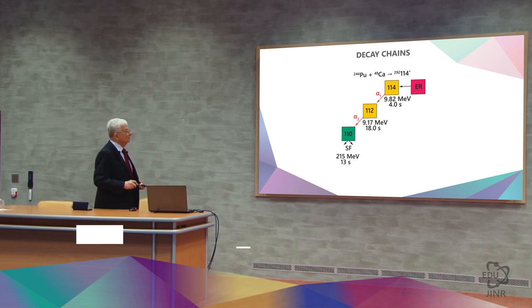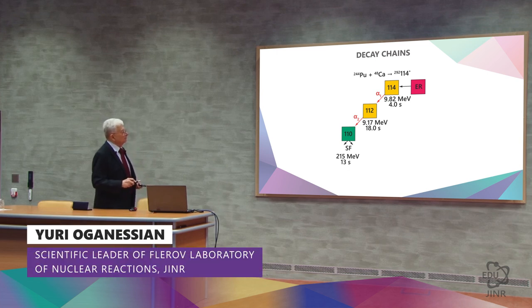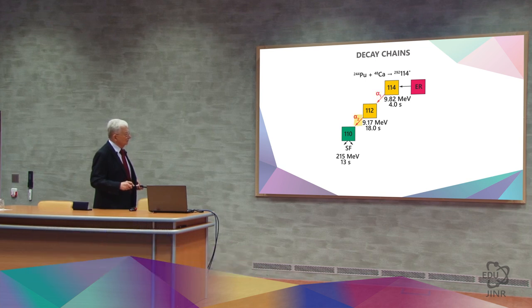You may remember that at first, it was plutonium and calcium-48 where we saw one alpha decay, then a second alpha decay, and then spontaneous fission.